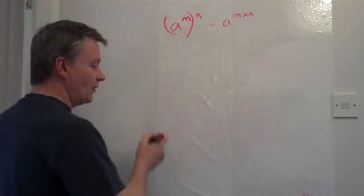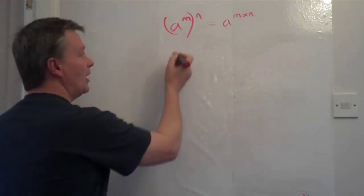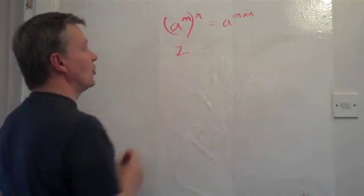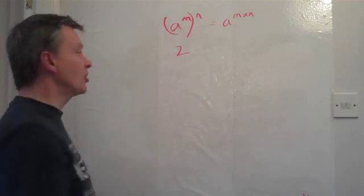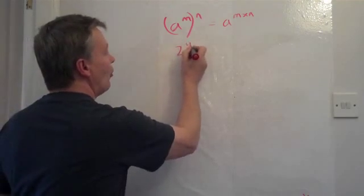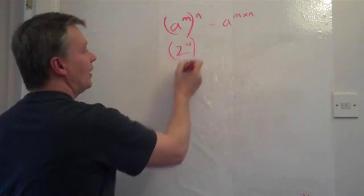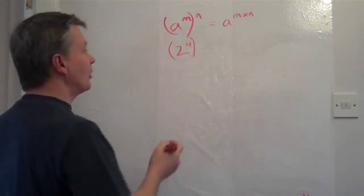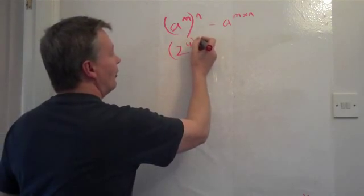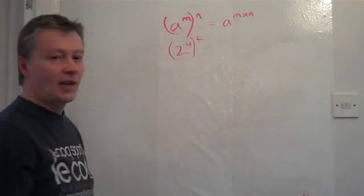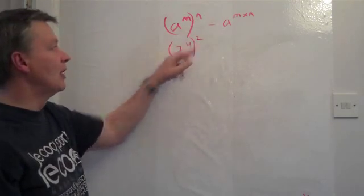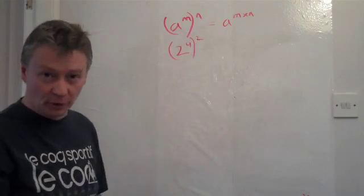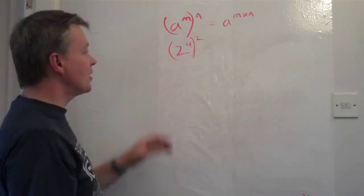So what I'm going to do is I'm going to put in the number, let's say, 2. And I'm going to say it's 2 to the power of 4. And then I'm going to put that in brackets and I'm going to raise that again to the power of 2. So I've got (2^4)^2. So actually, if I deal with the brackets first,